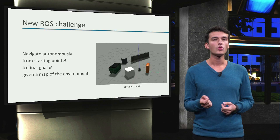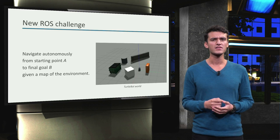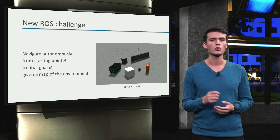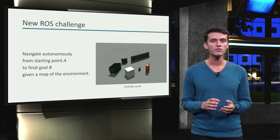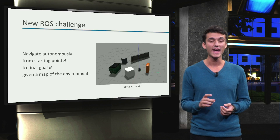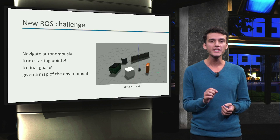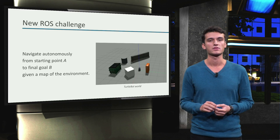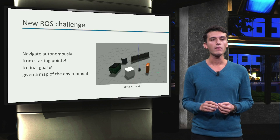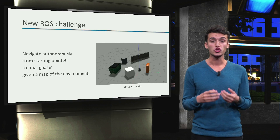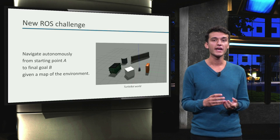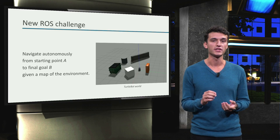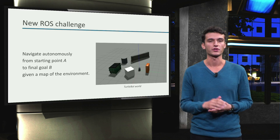Now we have a new challenge. We will add some intelligence to our robot. So far, all the movements we have achieved were basic and predefined by us. Now we would like to give the TurtleBot a target position and have it navigate autonomously to reach that target.